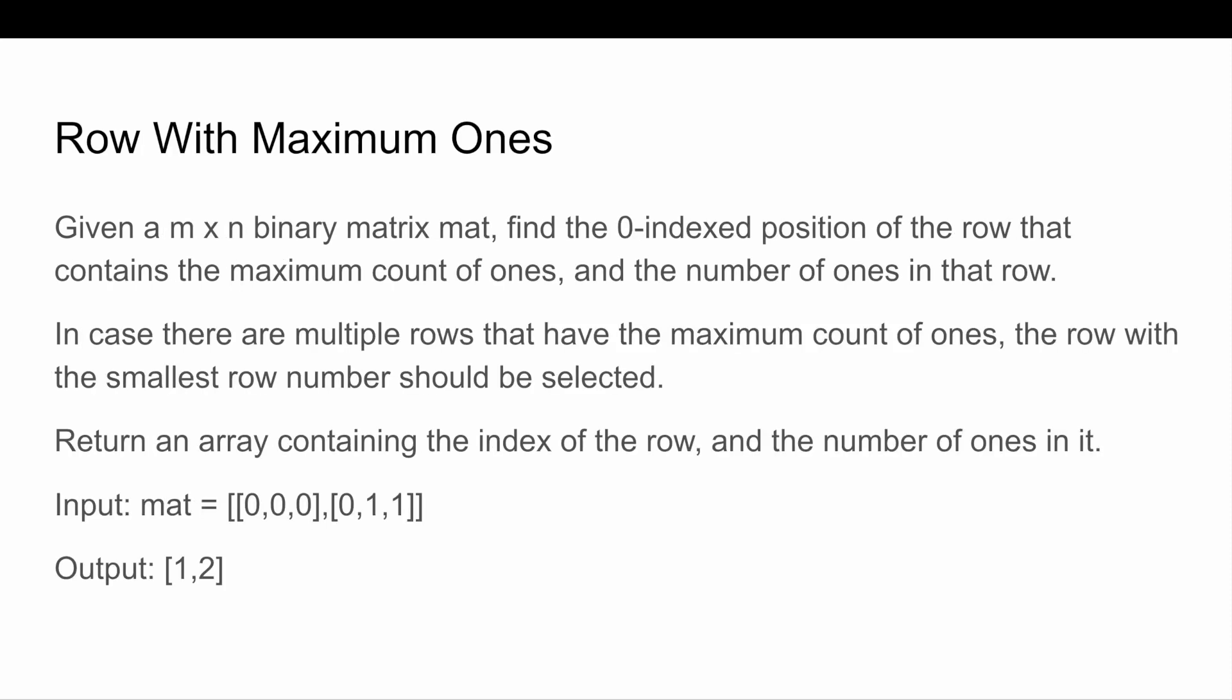Next question is row with maximum ones. You are given an m x n binary matrix, and find the zero-indexed position of the row that contains the maximum count of ones and the number of ones in that row. In case there are multiple rows that have the maximum count of ones, the row with the smallest row number should be selected. Then return an array containing the index of the row and the number of ones in it.